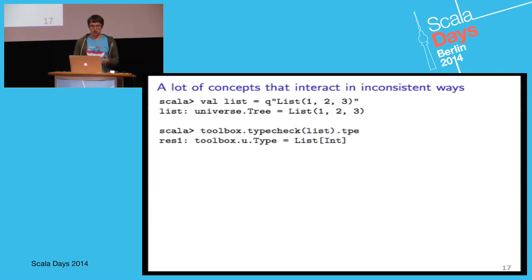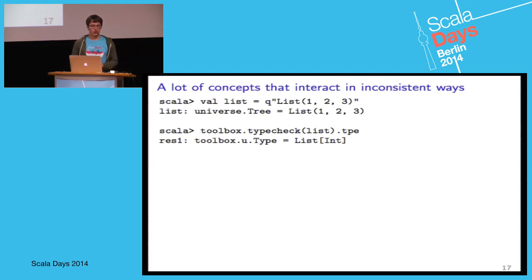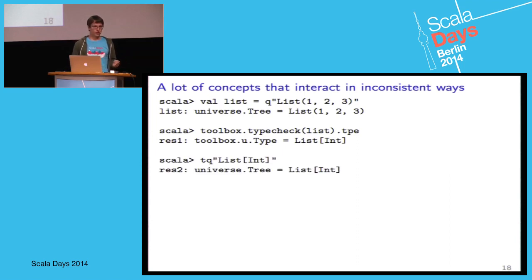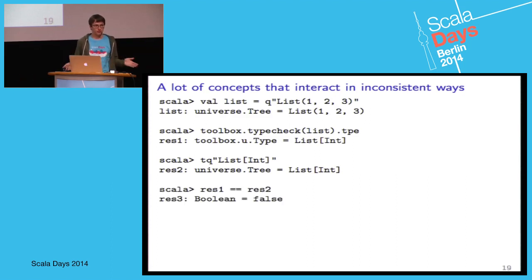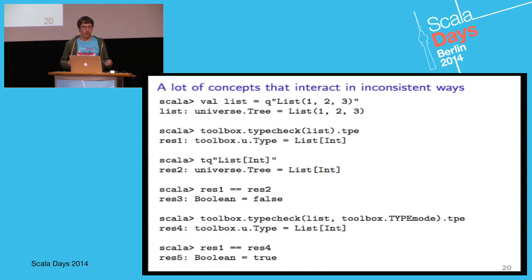Let's see an example. Say we have a list, and this quasi-quote represents a list of one, two, and three — that's a tree. If we type-check this tree, we can get to its type. There are trees and types — so far, pretty good. Then we discover that we also have trees that represent types — maybe you remember they're called TypeTrees. So how is this u.type and universe.tree that represents the same type — how do they work with each other? Well, they don't. If you compare them, these are two different entities. This is quite a popular question on Stack Overflow. What you actually need to do to reconcile them is type-check the type tree using a type mode and get a type from it.